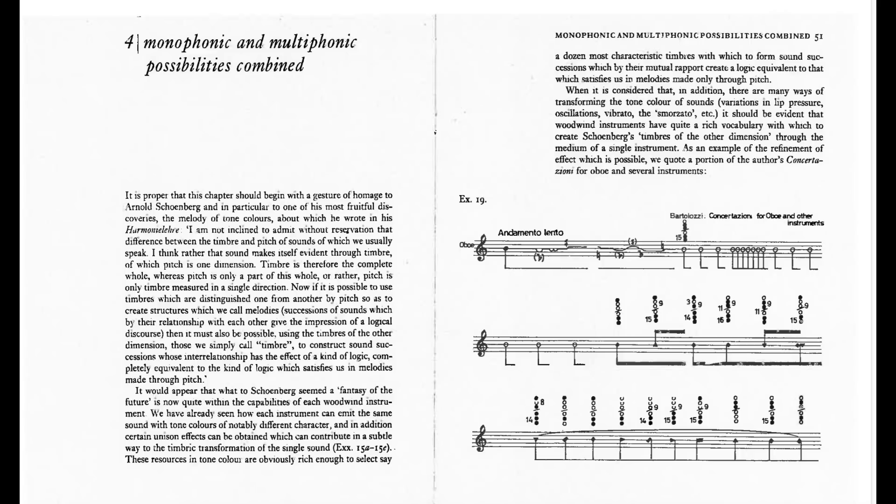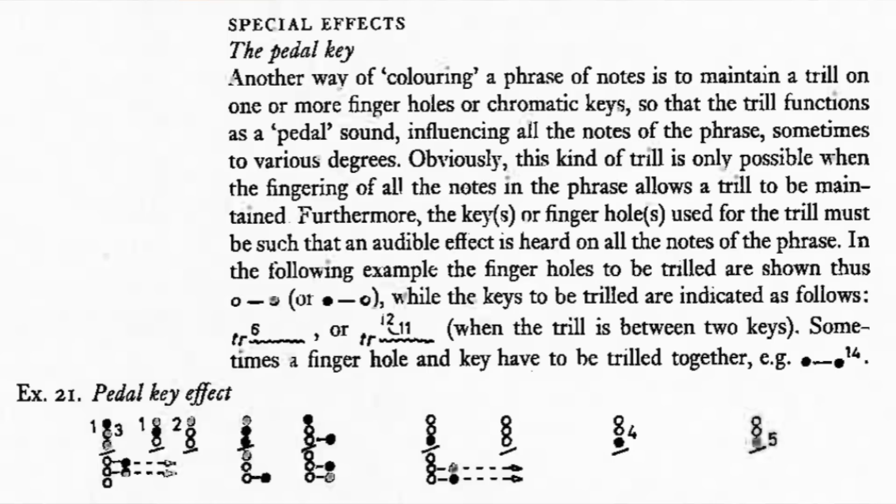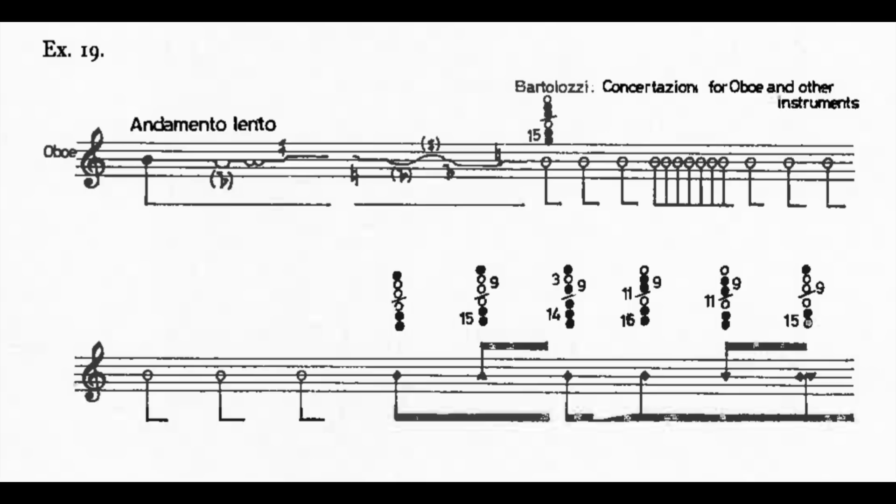The book listed things such as multiphonics, microtones, slap-tongue, key clicks, color trills, and many other effects, complete with an entirely new range of notations and a 7-inch vinyl disc to illustrate the sounds described. This was no longer a matter of coloristic touches, but rather entire new categories of sound production.